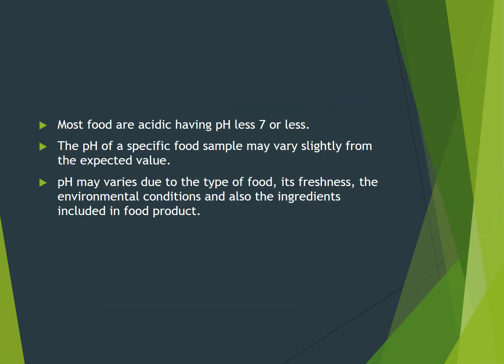Most foods are acidic — they have a pH less than 7. The pH of specific food samples may vary slightly from the expected value. They can vary due to environmental factors, the ingredients used, and how old the food product is. There are many factors that come into play when you are going to measure the pH of a food.